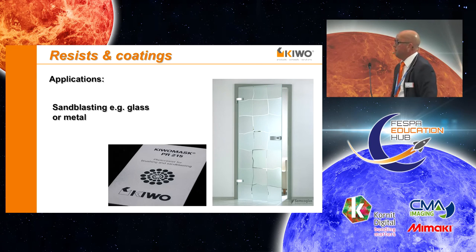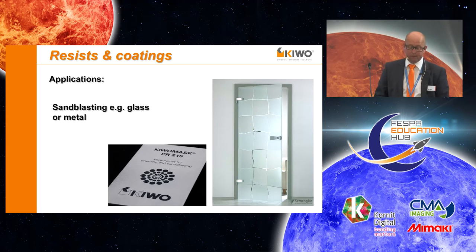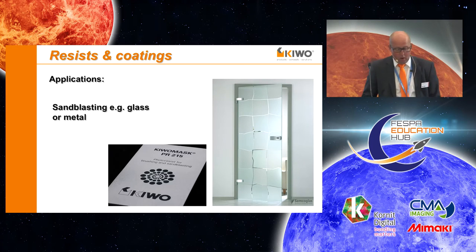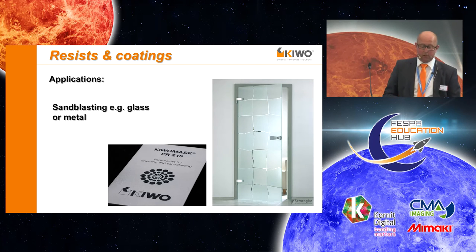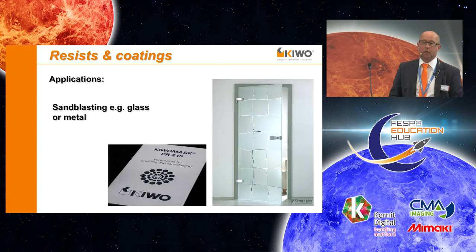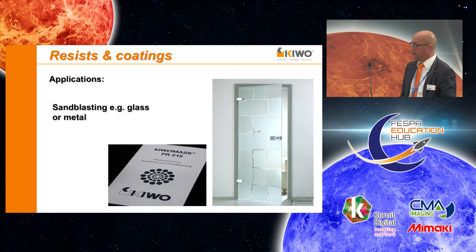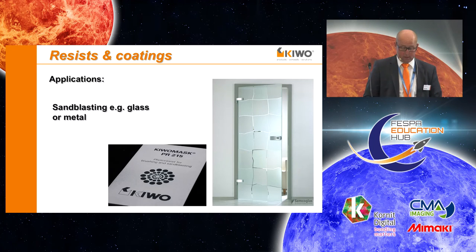Sandblasting is a common method for producing matte surfaces on metal or glass. In this type of surface treatment, it is possible to mask certain areas with a resist in order to protect them from the sandblast corundum. This can be done either by screen printing or with a photoresist.